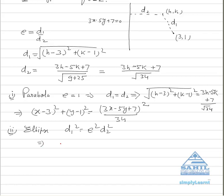We have to just put the values and we can convert h and k into x and y also. So your result will be (x minus 3) whole square plus (y minus 1) whole square equals (1 by root 2) whole square into (3x minus 5y plus 7) whole square upon 34. This is the equation of ellipse.